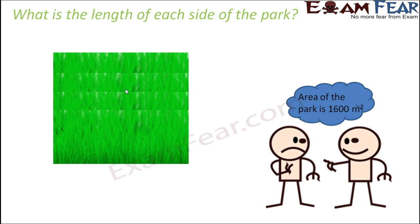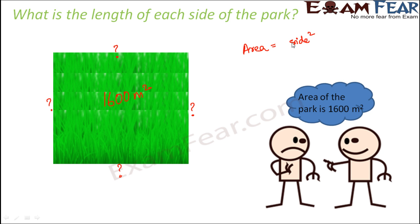Let me take this example. Let's say that there is a park in your locality which is in the shape of a square. The area of the park is 1600 square metres — that means the total region enclosed by the square is 1600 square metres. So you know the area this time. Your friend asks you: what is the length of each side of the park? We know that area of a square equals side squared, so 1600 is the area.